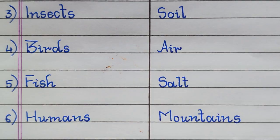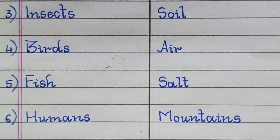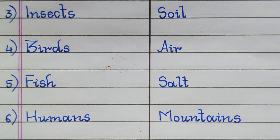Other examples of biotic factors are insects, birds, fish, and humans. Other examples of abiotic factors are soil, air, salt, and mountains.